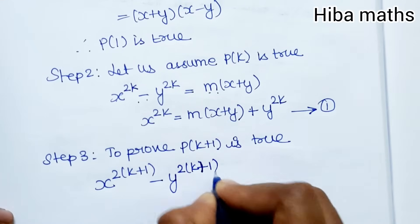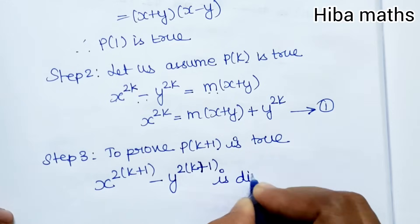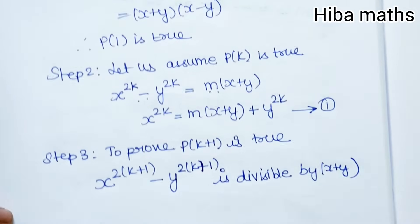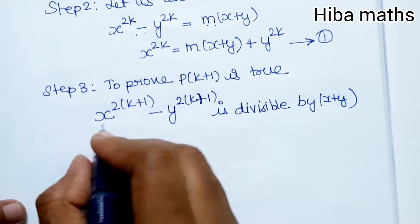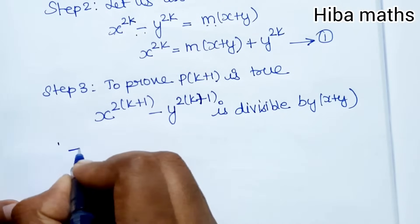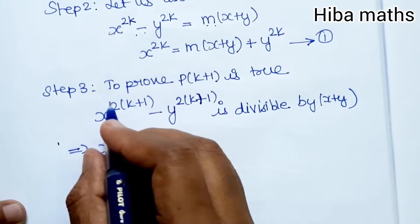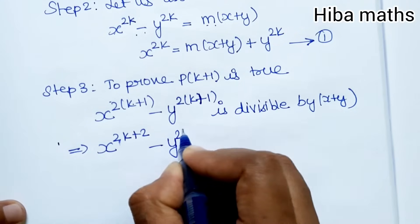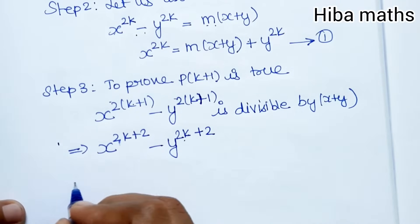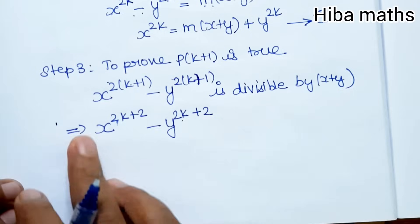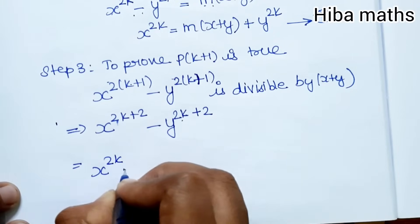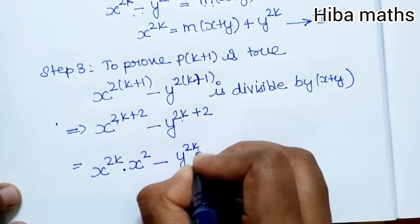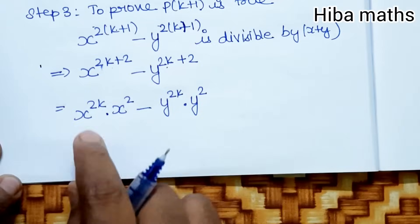Now we need to prove P(k+1). Consider x^(2k+2) - y^(2k+2). Using power addition as multiplication, this becomes x^(2k) × x² minus y^(2k) × y².